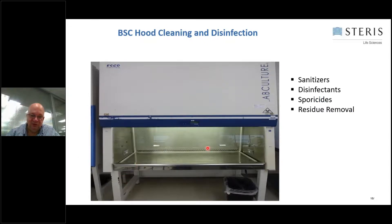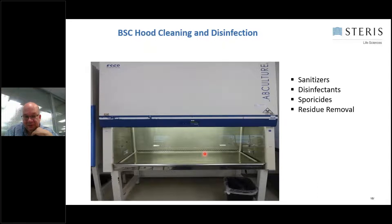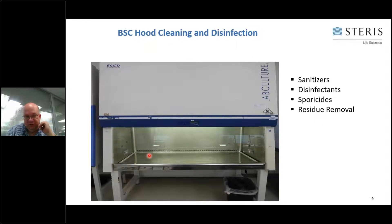For BSC hoods, use IPA for residue removal and ensure routine use of disinfectants. Start at the top with overlapping unidirectional strokes. Frequent use of a sporicide in the hood is critical - by spray or sporicidal wipe - because mold and bacillus are high risk in the hood. Another key risk in cell and gene therapy is contamination from outside viruses such as poliovirus, parvovirus, or adenovirus coming in and infecting your cells. Periodic residue removal using IPA or water for injection ensures residue molecules don't get into your product.